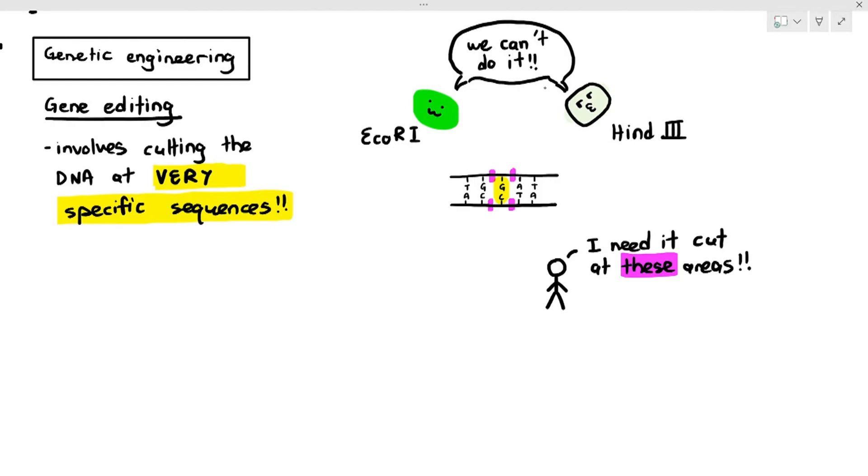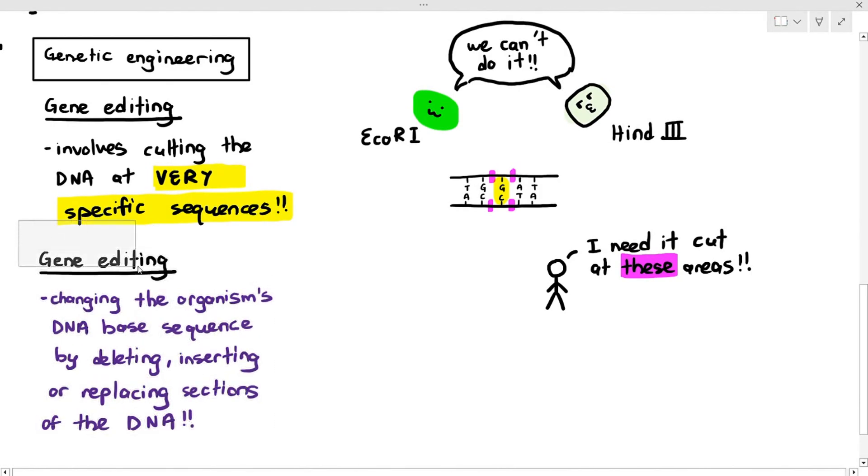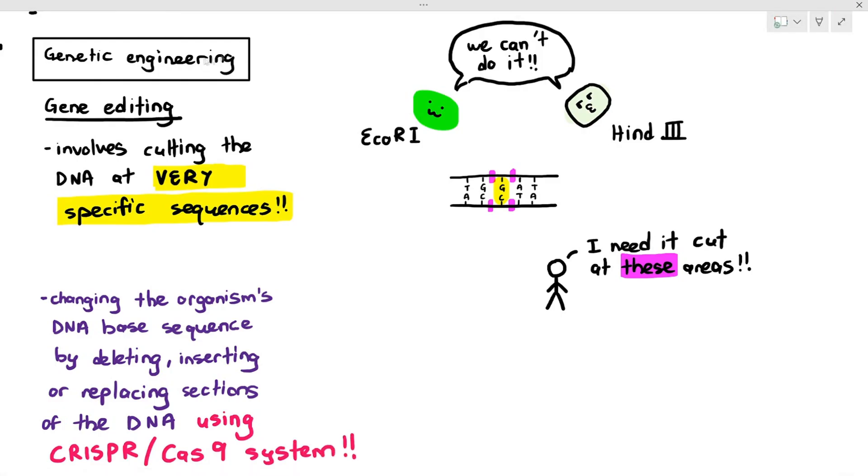So, the proper definition of gene editing here is changing the organism's DNA base sequences by deleting, inserting, or replacing sections of the DNA using a new technology known as the CRISPR-Cas9 system. Whenever I see the word CRISPR, all I can think of is potato chips. I have no idea why, it just comes to my mind. Anyway, the CRISPR-Cas9 system. I know a lot of students usually have problems with the CRISPR-Cas9 system because the textbook is a little bit confusing on this. So, I'll try to keep it as simple as possible.